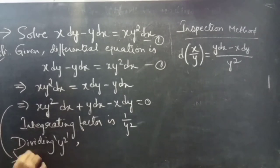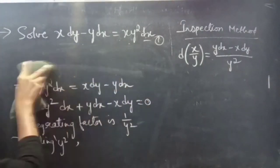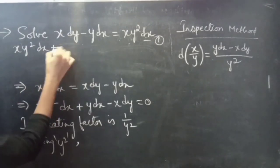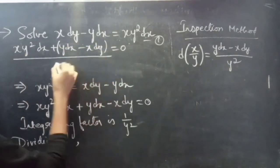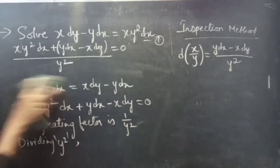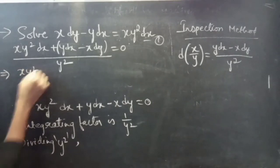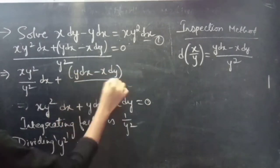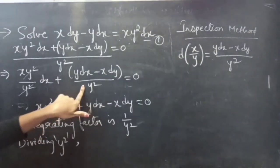Dividing by y squared, the equation becomes x y squared dx plus y dx minus x dy all over y squared equals to 0. We can cancel y squared from the first term to get x dx, and replace the remaining terms using the differential d(x/y).